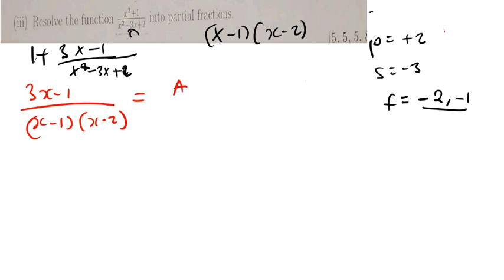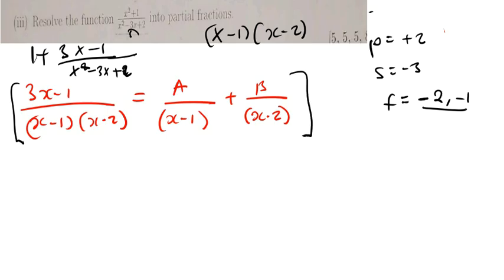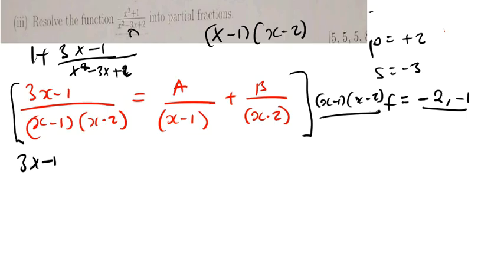Now this becomes: (3x minus 1) divided by (x minus 1)(x minus 2), which should equal A/(x minus 1) plus B/(x minus 2). Multiply everything by the denominator (x minus 1)(x minus 2). Our goal is to cancel terms: the (x minus 1) cancels with A's term leaving A(x minus 2), and the (x minus 2) cancels with B's term leaving B(x minus 1). So 3x minus 1 equals A(x minus 2) plus B(x minus 1).